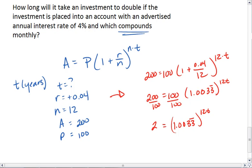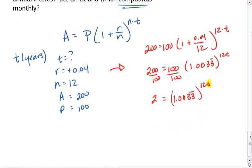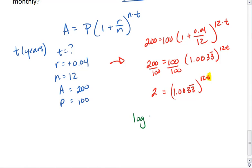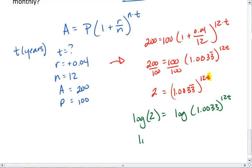Now here's the tricky part. We need to pull down that T. To do that, we want to use our logarithms. I'm going to take a log of both sides, which gives me log of 2 equals 12 times T times log 1.00333.